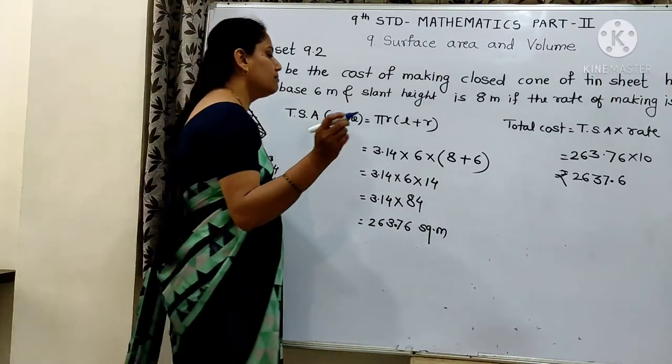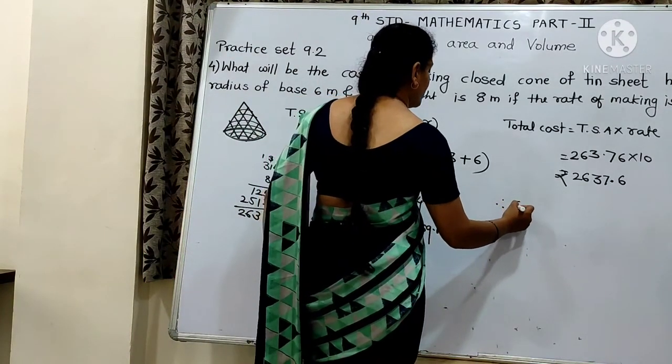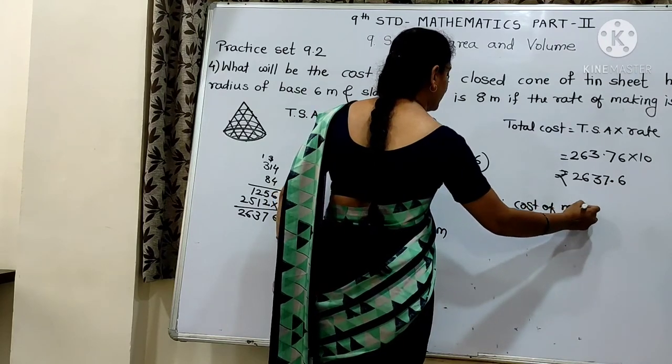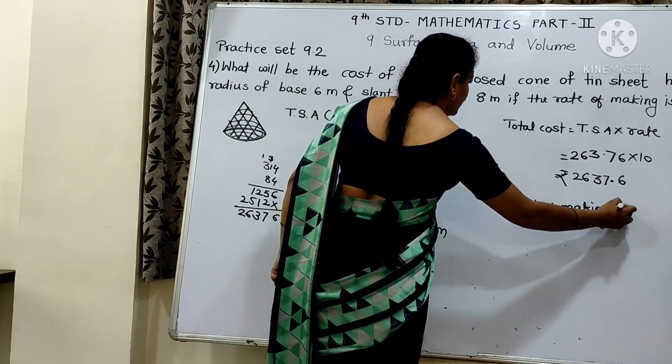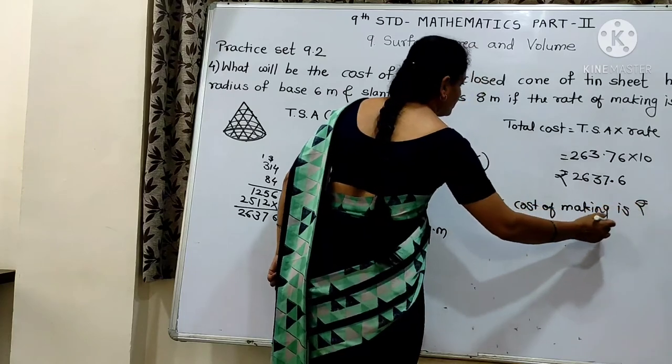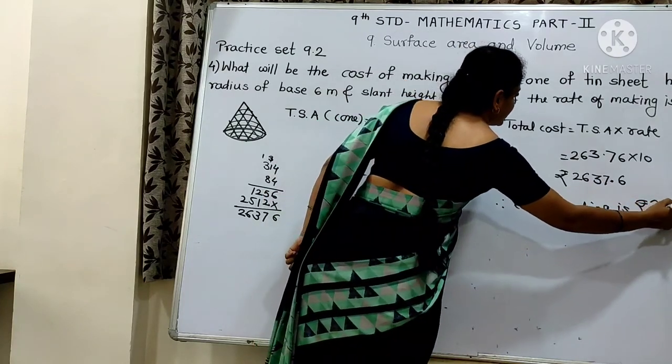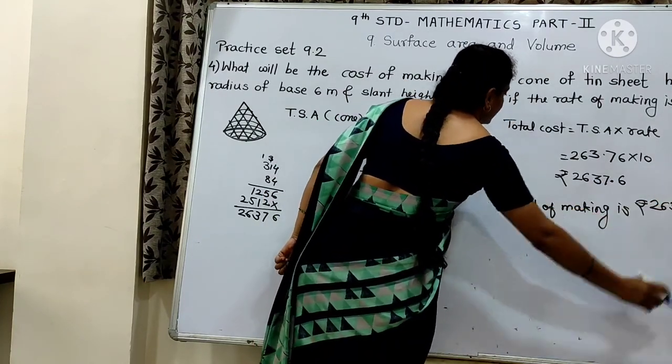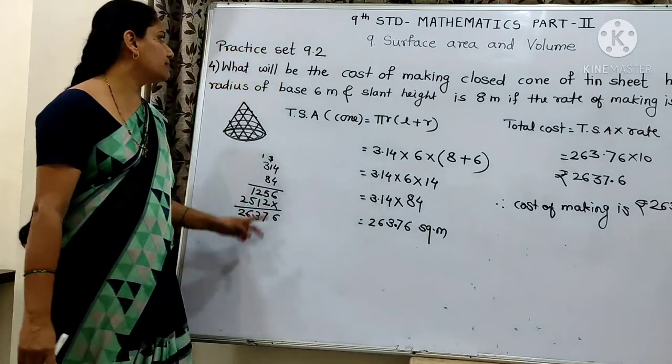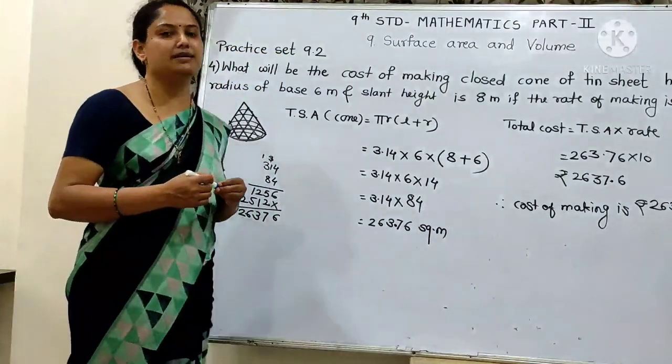So the cost of making is rupees 2637.6. This is how you can solve this problem.